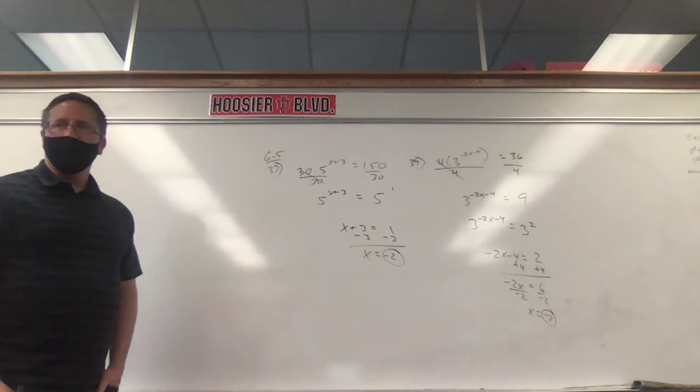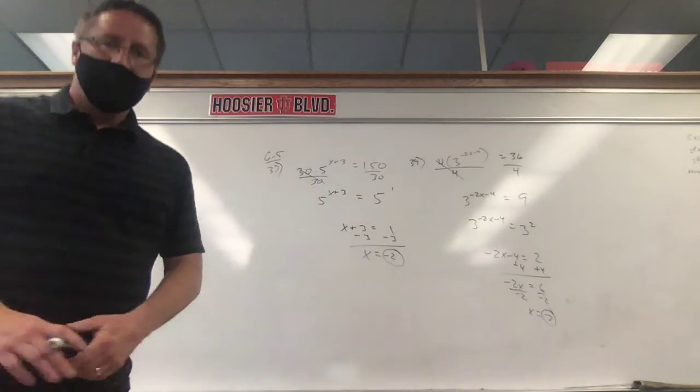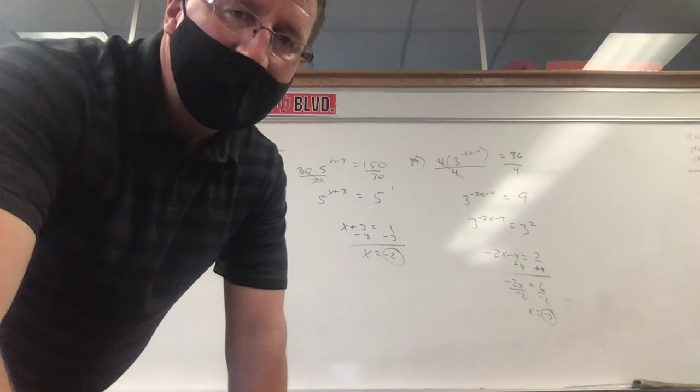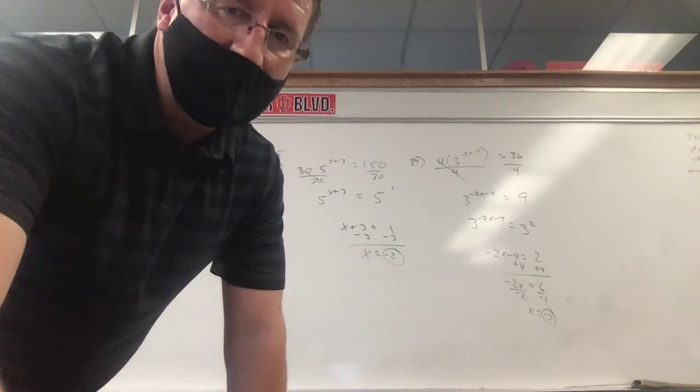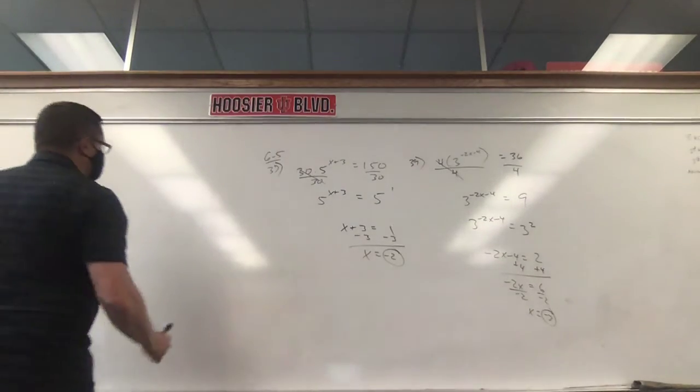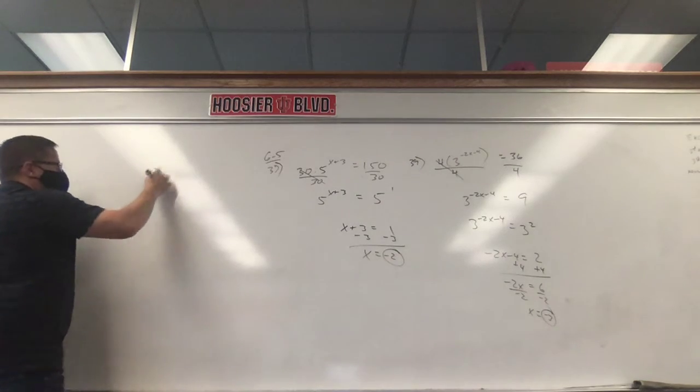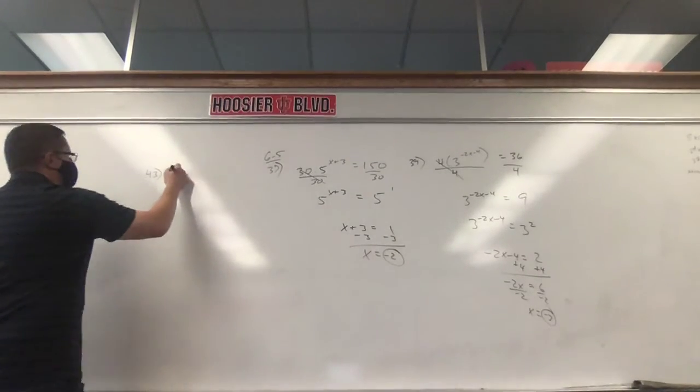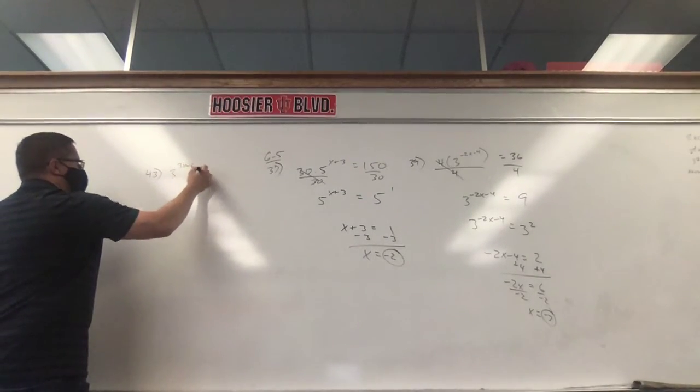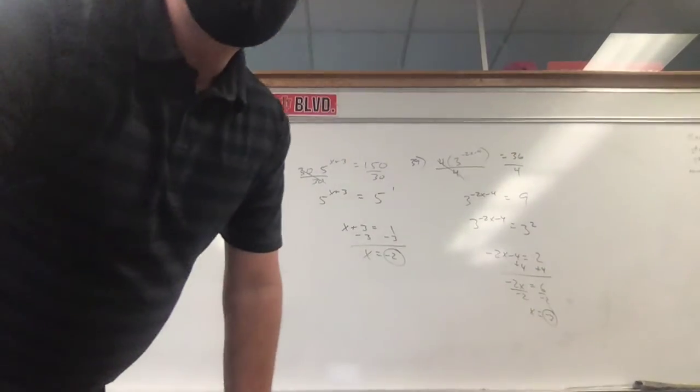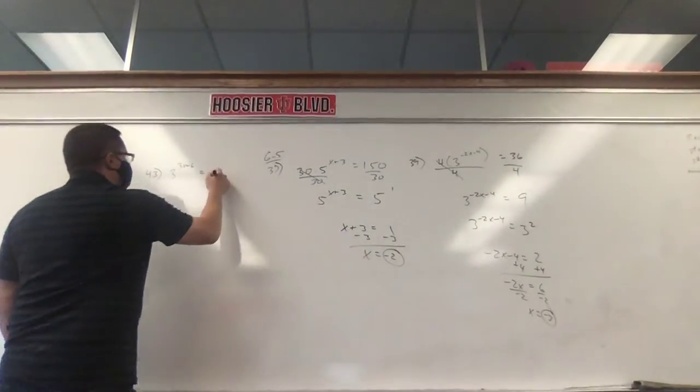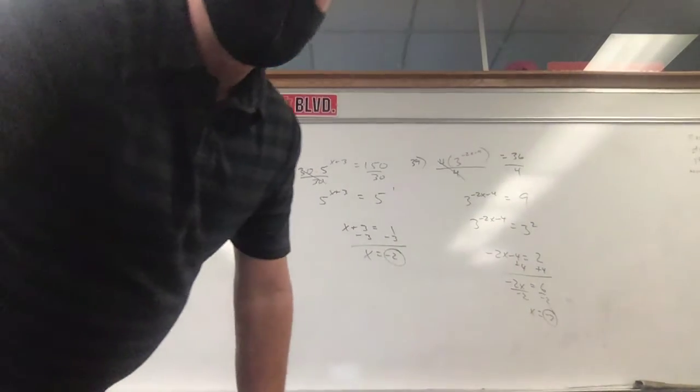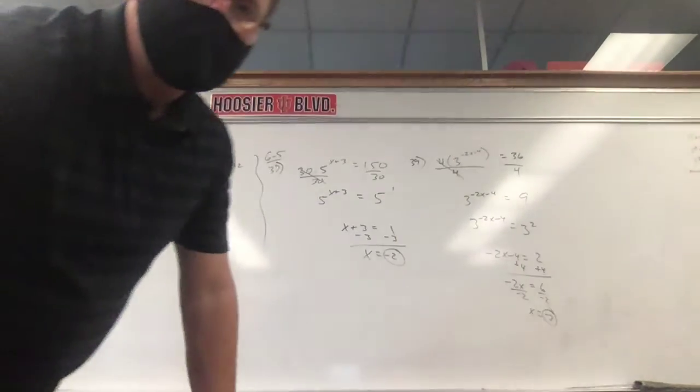That's basically the same problem. 40 is the next one in the assignment. You can do that one on your own. I just have two more to do with you guys. We're going to jump to number 43. Numbers 43 and 45. So 43, we have 3 to the 3X plus 6 has to equal 27 to the X plus 2. Let me make sure I wrote that down right. 3 to the 3X plus 6, 27 to the X plus 2.